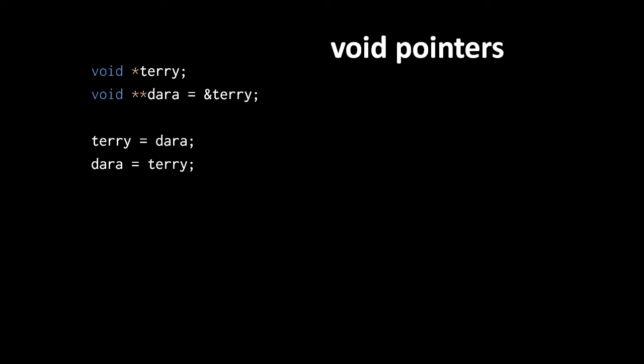As we discussed earlier, a void pointer is a generic kind of pointer, such that we can assign any kind of pointer to a void pointer without having to use a cast. Just like with the other pointers, we can create pointers to these pointers, so we can have a pointer to pointer to void.